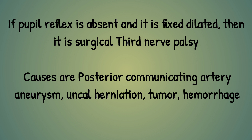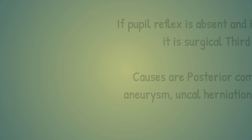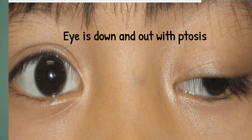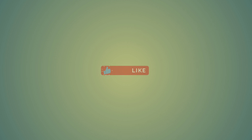In the next slide you will see a child with eye down and out with ptosis — this is the typical presentation of third nerve palsy. I hope you liked it. Please subscribe and like the channel.